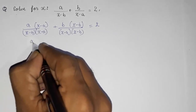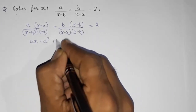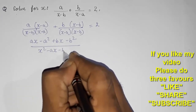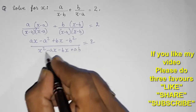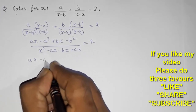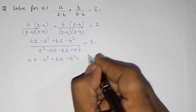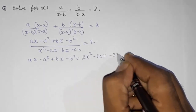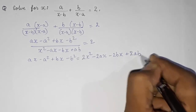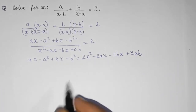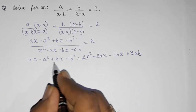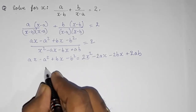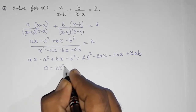Expanding: a(x minus a) plus b(x minus b) equals 2(x minus b)(x minus a). Left side becomes ax minus a squared plus bx minus b squared. Right side expands to 2x squared minus 2ax minus 2bx plus 2ab. Now rearranging, we want 2x squared positive on one side, so take everything to the other side.